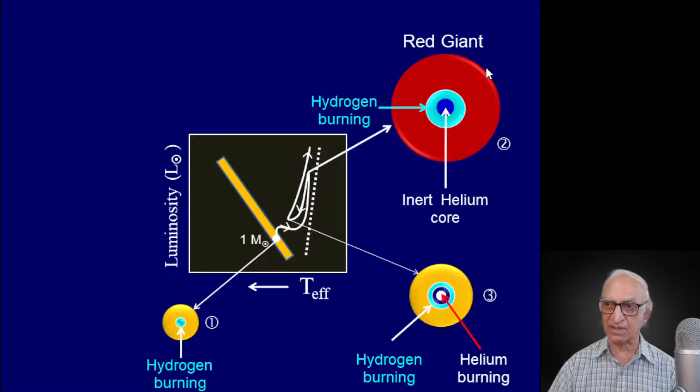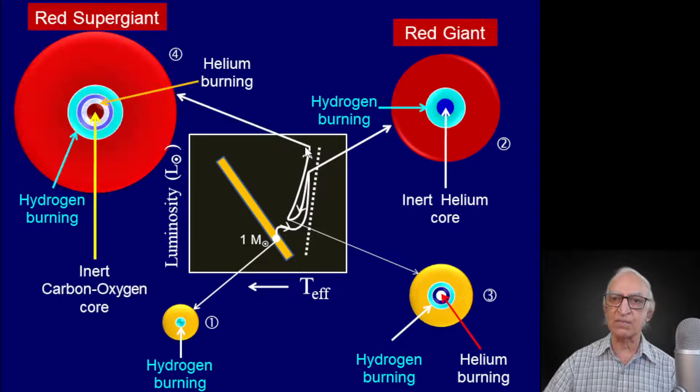Just as when the core contracts the star expanded, in a similar fashion when the core expands the star will contract. So the star will descend from the giant branch and then ascend once again along the giant branch, but this time it will become an even larger star — it will become a red supergiant.